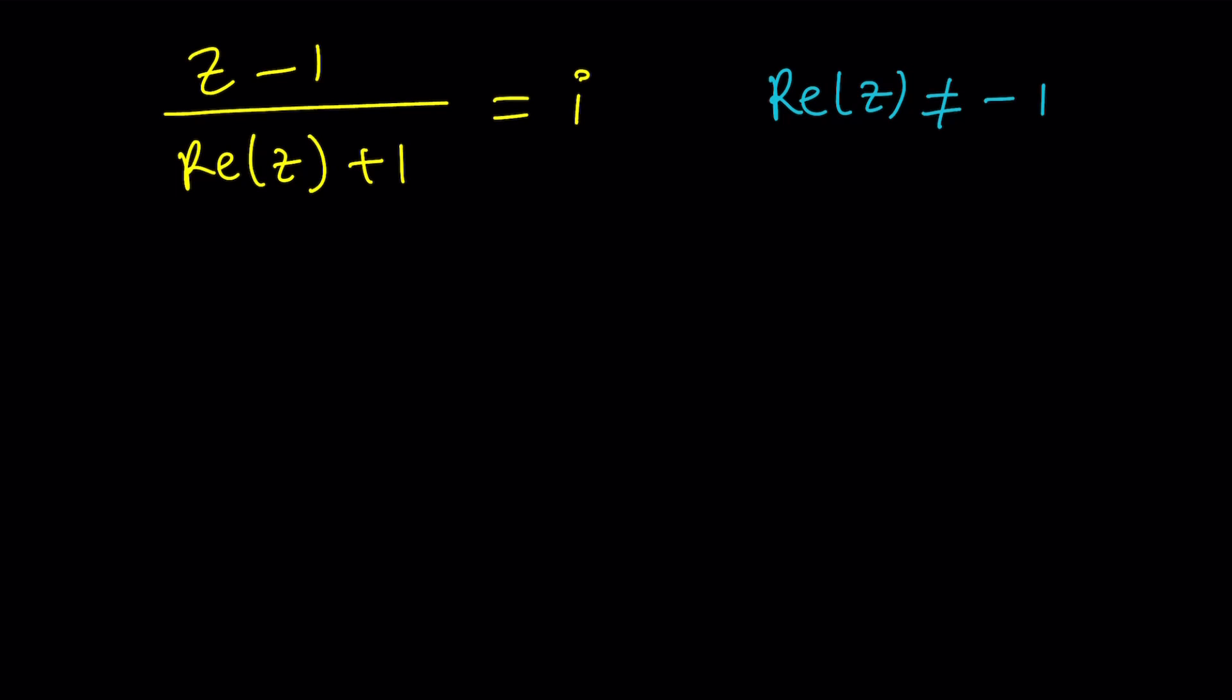How do you solve these kinds of equations? First of all, let's get rid of the fraction by using cross multiplication. Multiply these. That gives us Z minus 1 equals I times the real part of Z plus 1. And they are basically equal.